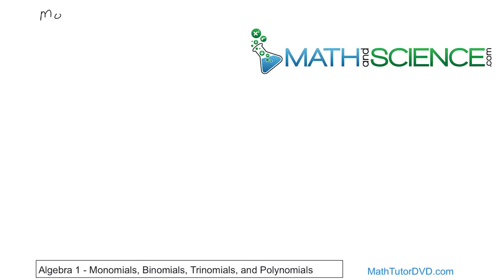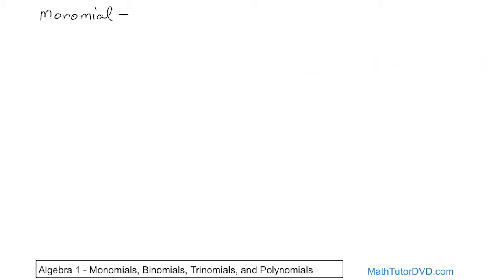We have this concept called a monomial. When you think about it, the prefix 'mono' means one. So when you see mono, you should think one. What this is basically telling you is it's one term. So a monomial is something like 17 — even the number 17 is a monomial because it's only one term. Or x by itself is one term, or x squared sitting by itself is just one term. One half times y — these are glued together with multiplication, so it's one term.